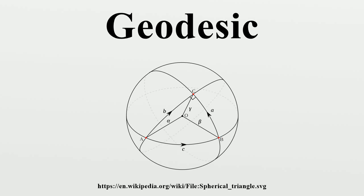In differential geometry, a geodesic is a generalization of the notion of a straight line to curved spaces. In the presence of an affine connection, a geodesic is defined to be a curve whose tangent vectors remain parallel if they are transported along it. If this connection is the Levi-Civita connection induced by a Riemannian metric, then the geodesics are the shortest path between points in the space. The term geodesic comes from geodesy, the science of measuring the size and shape of Earth, in the original sense.